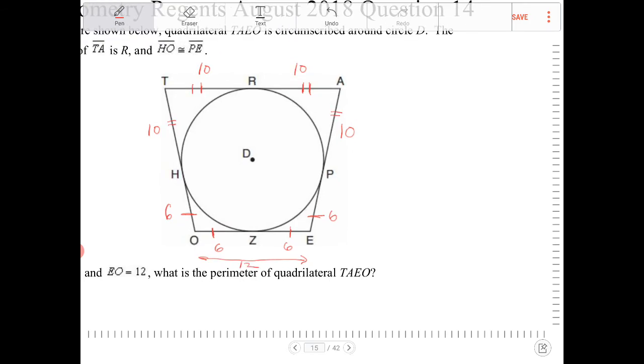So now we have enough information to find the perimeter. The perimeter is equal to how many 10s do we have? We have four 10s. How many 6s do we have? We have four 6s. So this is simply 40 plus 24, or the perimeter is equal to 64.